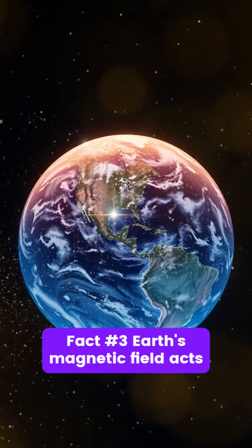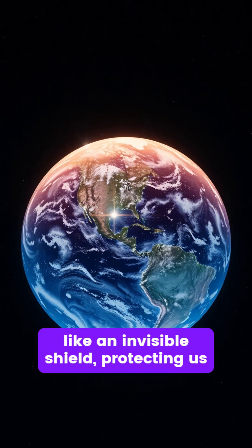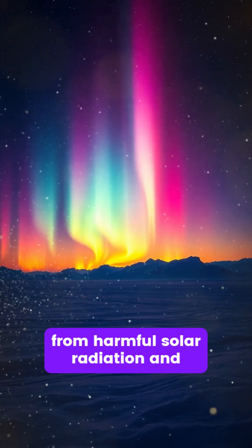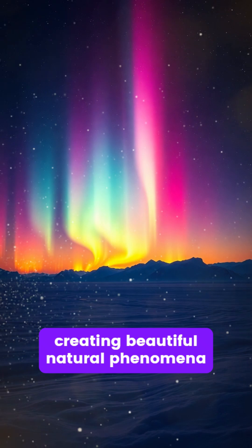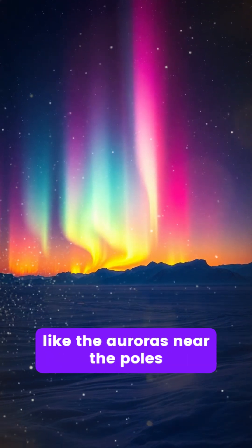Fact number 3. Earth's magnetic field acts like an invisible shield, protecting us from harmful solar radiation, and creating beautiful natural phenomena like the auroras near the poles.